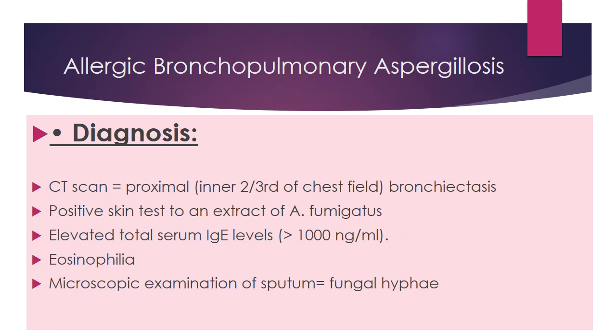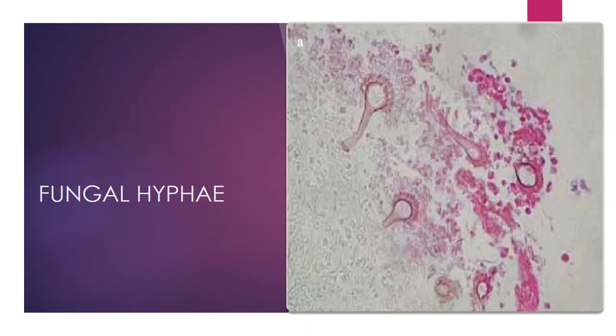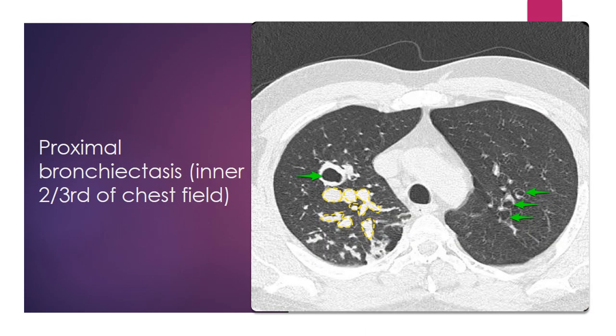The diagnosis can be made by CT scan, which will show proximal bronchiectasis in the inner two-thirds of the chest field. There will also be a positive skin test to an extract of Aspergillus fumigatus, elevated total serum IgE levels, eosinophilia, and microscopic examination of sputum will reveal fungal hyphae.